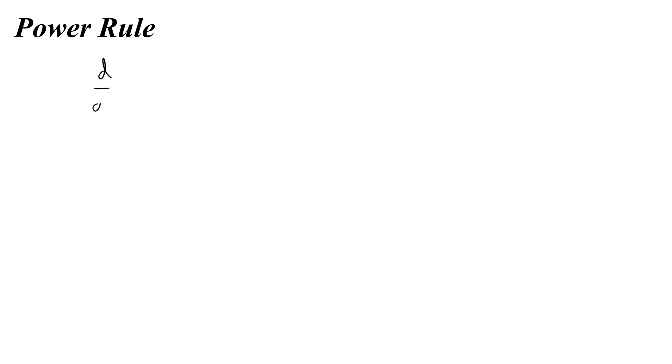In this video we're going to go over all of the derivative equations that are given to you on the AP Physics C equation sheet. The first we're going to start with is the power rule. The power rule is given to you on the equation sheet like this: the derivative of some function with respect to x, if that function is x to the n, equals n times x to the n minus 1. This is the derivative we're all familiar with — it's the trick of calculus.